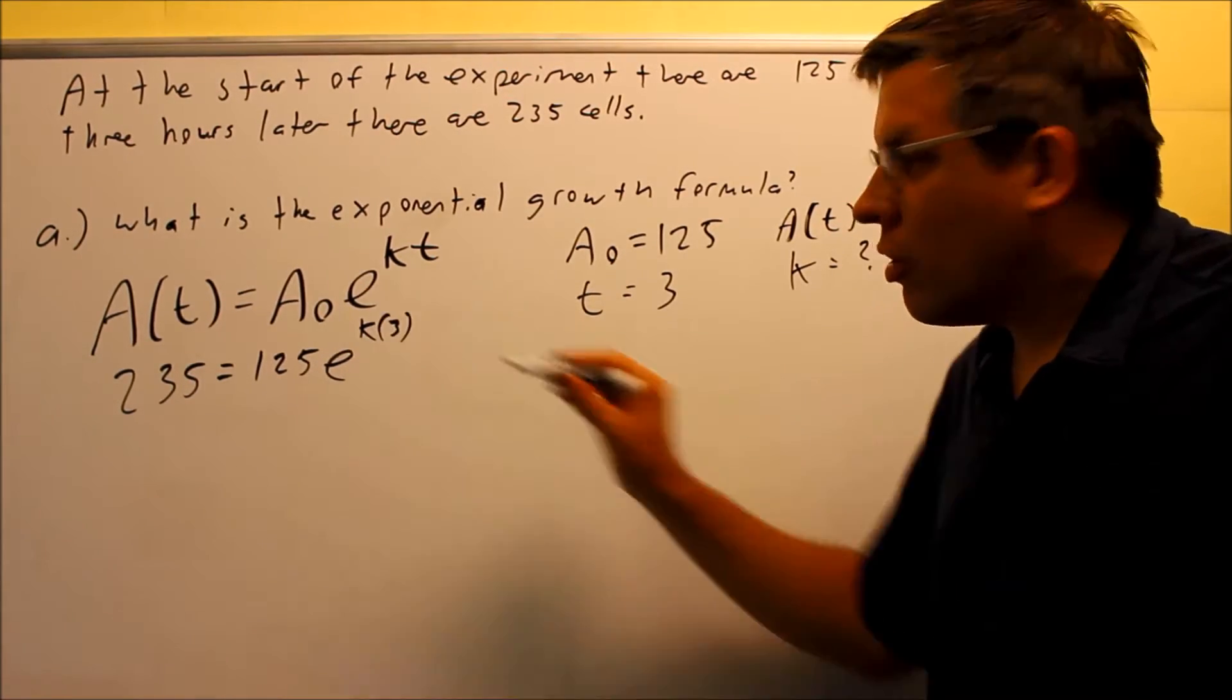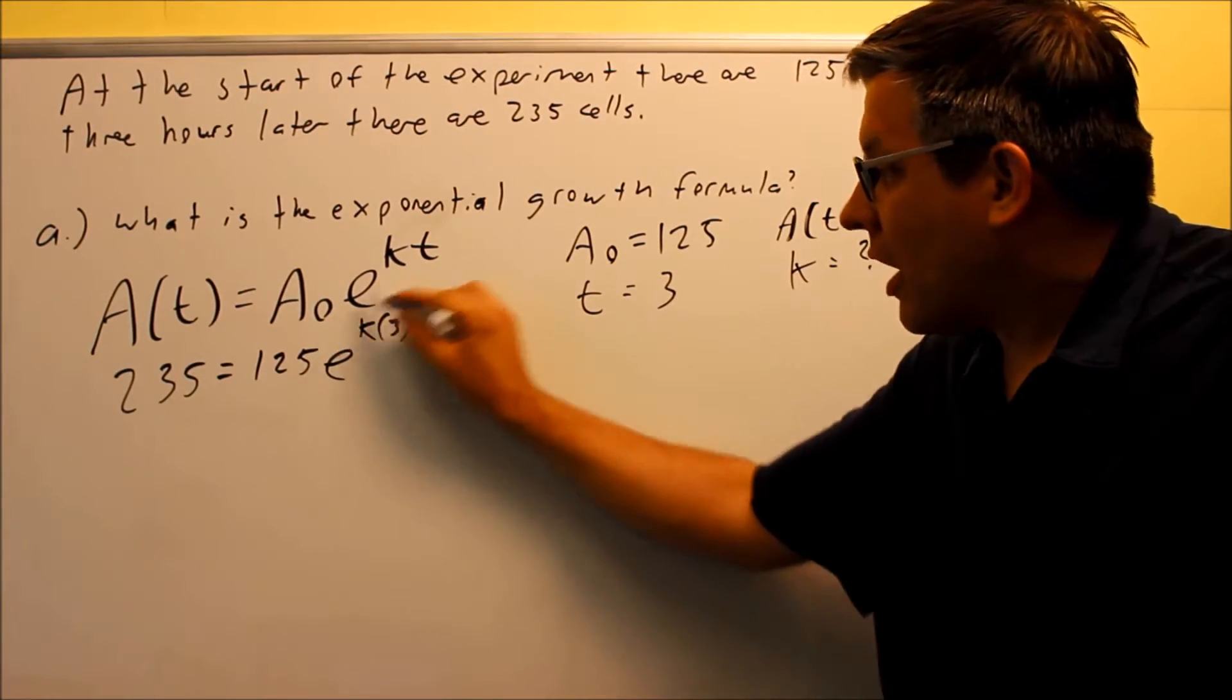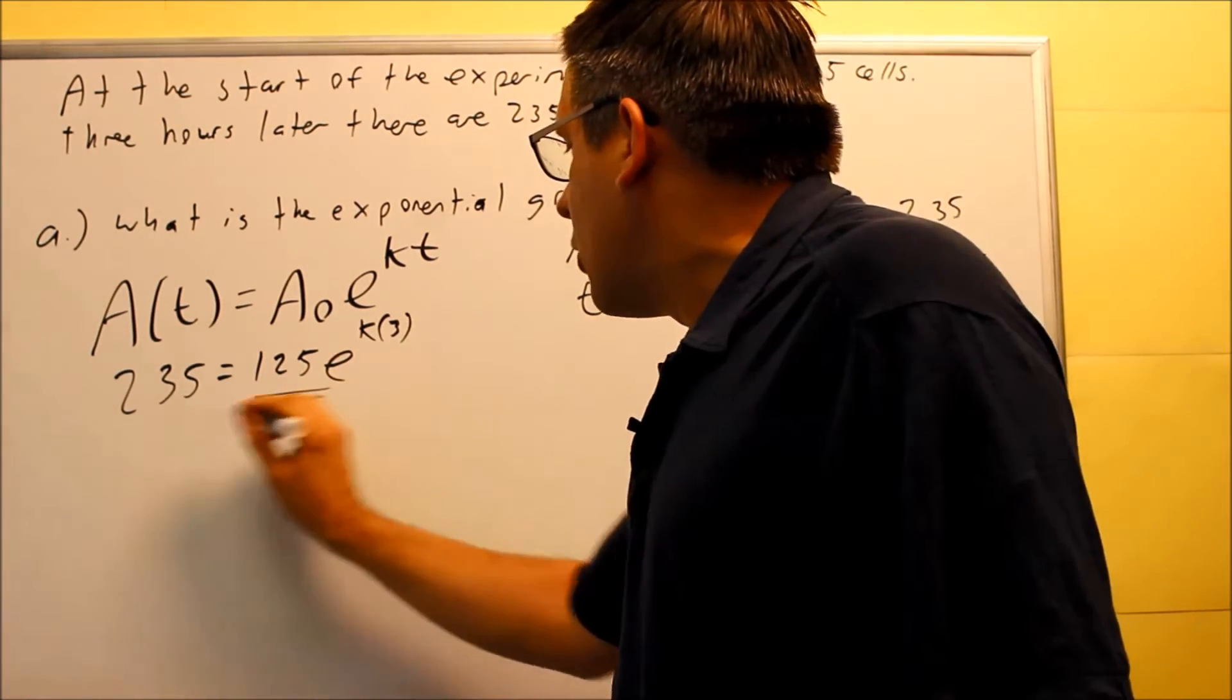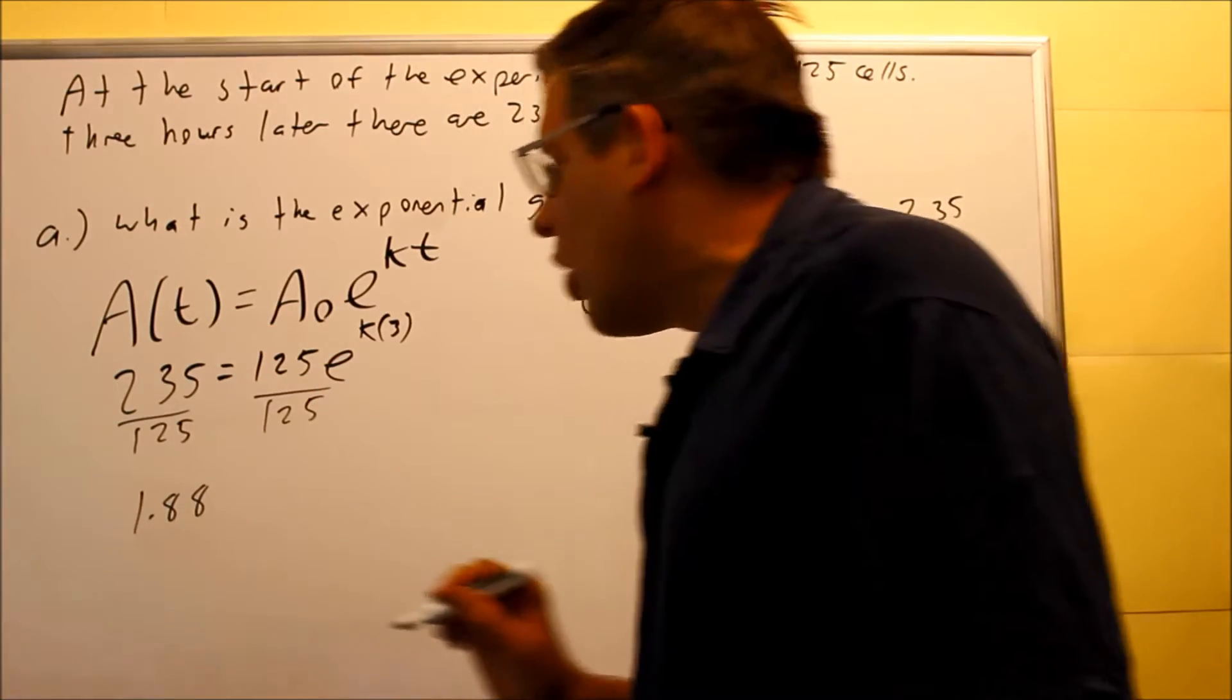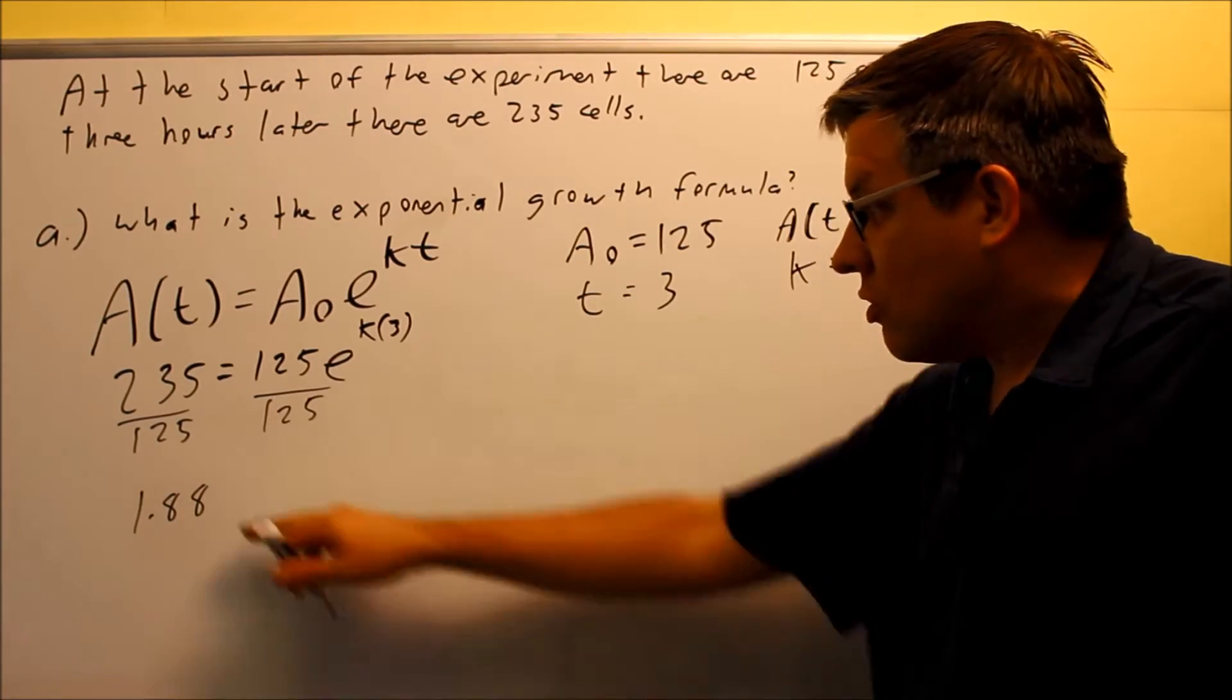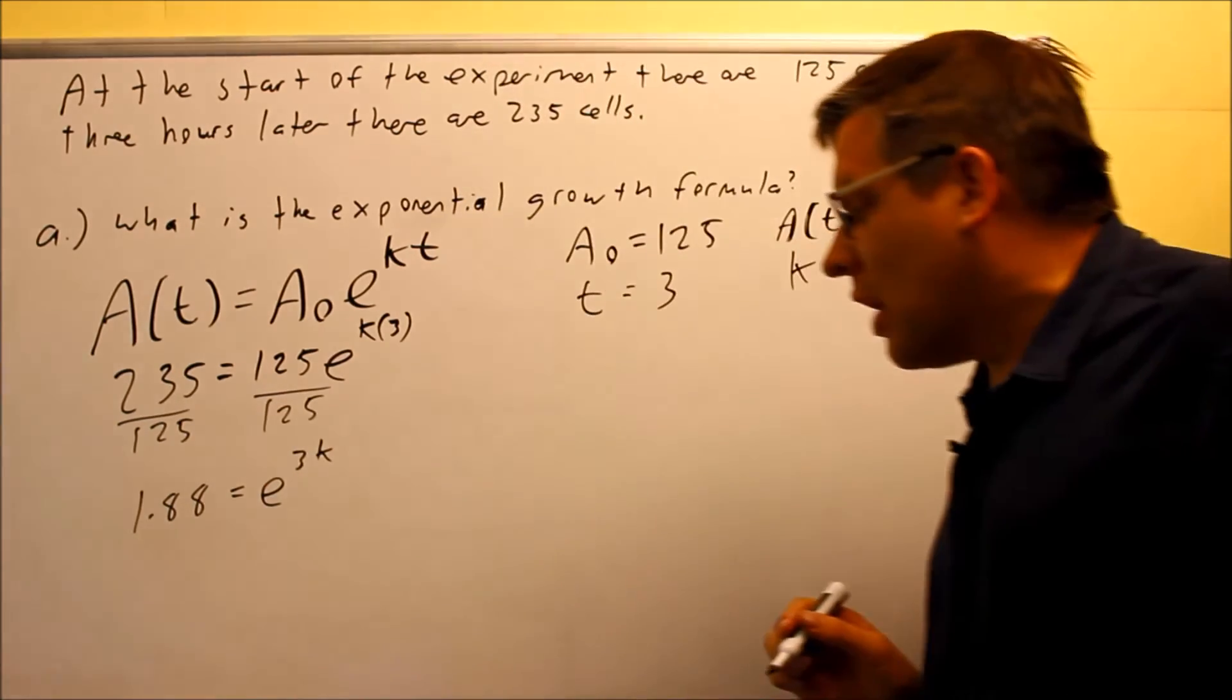I just put all this information plugged directly into the formula. I want to solve for k, so I have to find that by itself. I'm going to isolate the term that has the k in it. So the first thing I want to do is divide both sides by 125. And if you do that, that actually gives you 1.88. On this side, that would be e to the 3k.